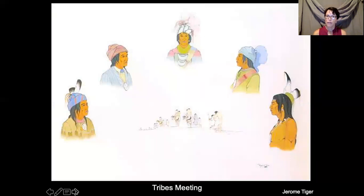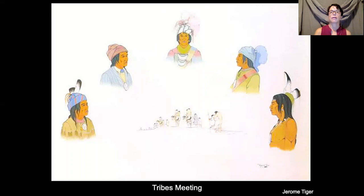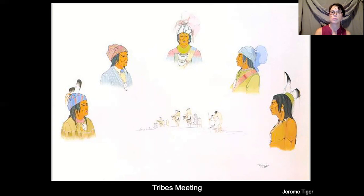There were five main tribes considered the civilized tribes of Native Americans: the Choctaw, Cherokee, Seminole, Creek, and Chickasaw. These two groups are where Jerome Tiger's relatives came from. In the middle of the slide, there's a picture of the trail of people marching on the Trail of Tears. So this is the five main civilized tribes.